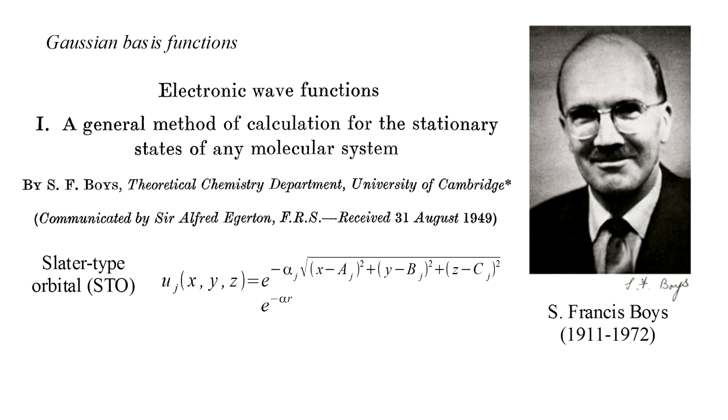Boys suggested the use of Gaussian-type orbitals, which lack the square root, and have the form of e to the minus alpha r squared. He showed that the mathematical calculations needed to set up the Roothaan equations can then readily be done, leading to a practical method for implementation on a digital computer.